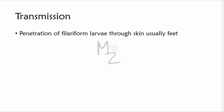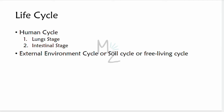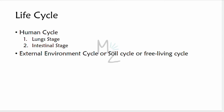Transmission occurs by penetration of filariform larvae through the skin, usually the feet. Strongyloides stercoralis has two distinct life cycles: one within the human body, termed the human cycle, which is further classified as the lung stage and the intestinal stage; and the other is free-living in the soil, termed the external cycle, soil cycle, or free-living cycle.